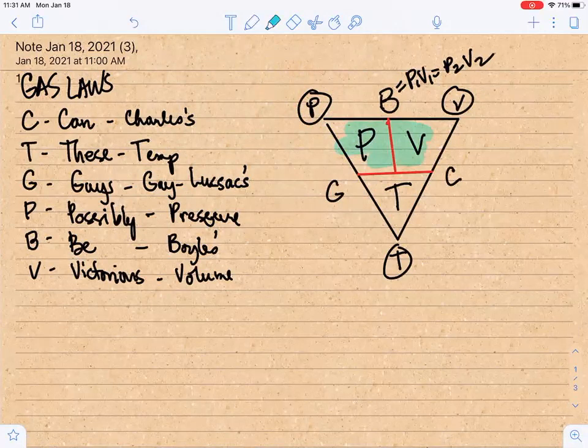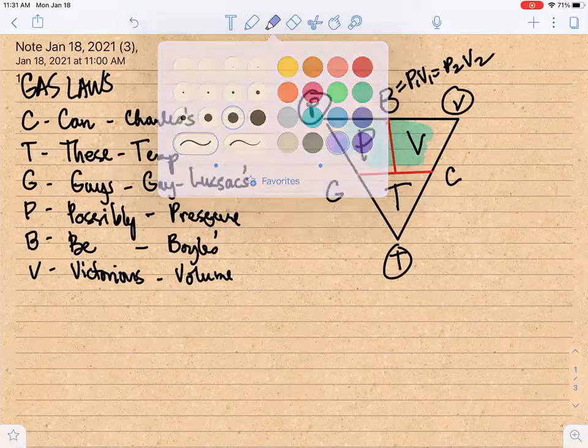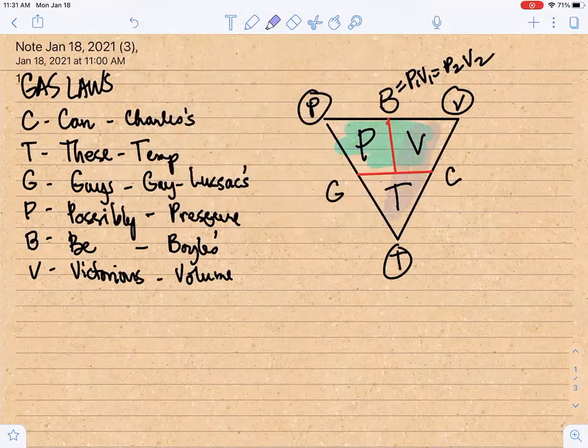Then for Charles's law, we have the relationship between volume and temperature. So we divide it in the mathematical representation. So we have here, Charles's law is V1 over T1 is equal to V2 over T2.